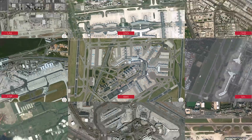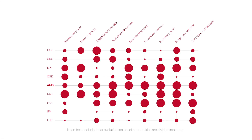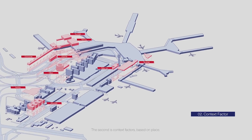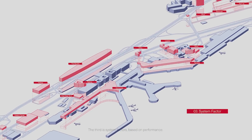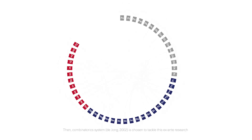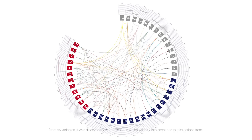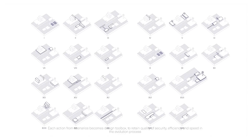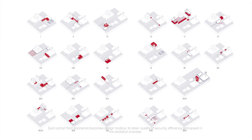Through comparative study, iterative research, and interviews, it can be concluded that evolution factors of airport cities are divided into three: the first is user factors — the people; the second is context factors — the place; the third is system factors — the performance. After the breakdown of all factor variables, it's more important to see the relation between forces than looking at singular action. A combinatoric system is chosen to tackle this research. From 45 variables, 22 combinations were discovered, which turn into scenarios for action. Each action from scenarios becomes a design toolbox to retain quality of security, efficiency, and speed in evolution processes.